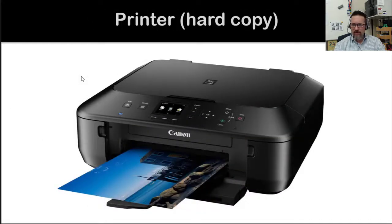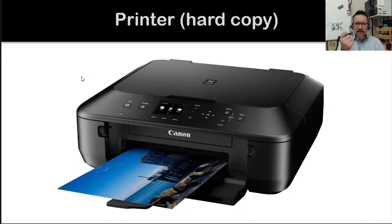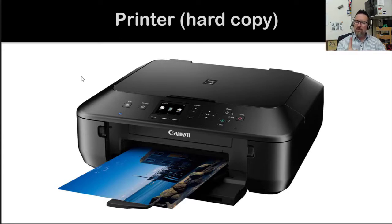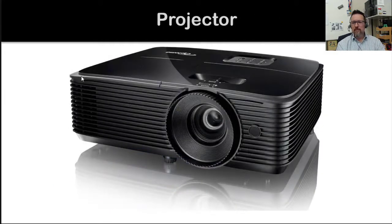A printer — a very well-known output device. The printer produces what we call a hard copy: something you can see and touch. That means soft copy is the opposite — it's something on the computer that you can't touch physically.